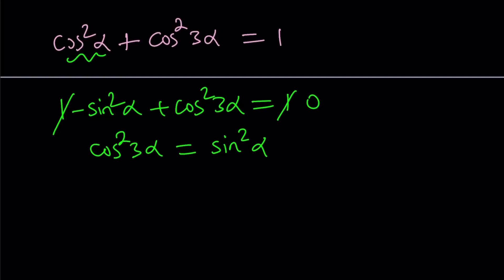then those two angles will have the following property. Let's say alpha and beta are complementary. Then sine alpha will be the same as cosine beta. In other words,